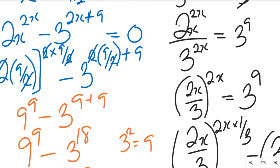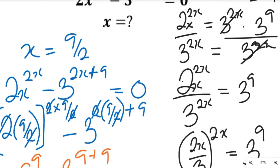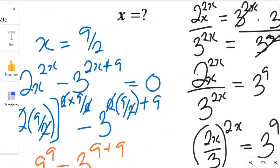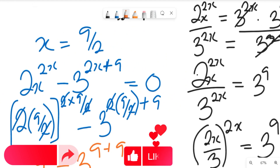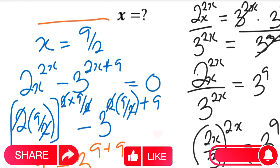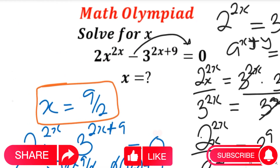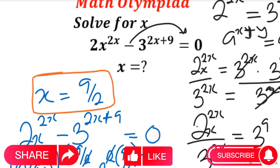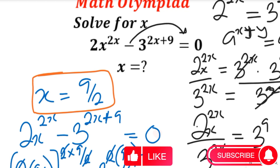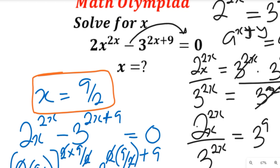So that simply tells us that our solution, x equal to 9 over 2, is actually the solution to this exponential equation. This is all we have for you for today. Don't forget to share this video with your friends and colleagues, and also subscribe to this channel for more of our simplified mathematics videos. Thank you.